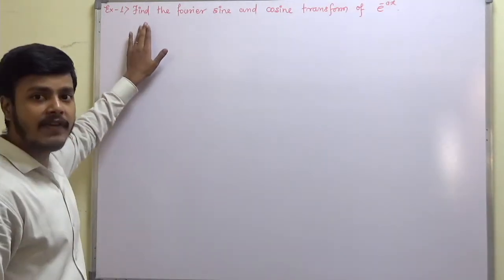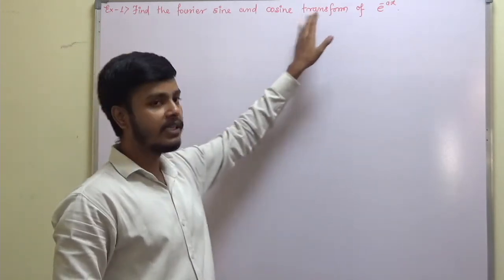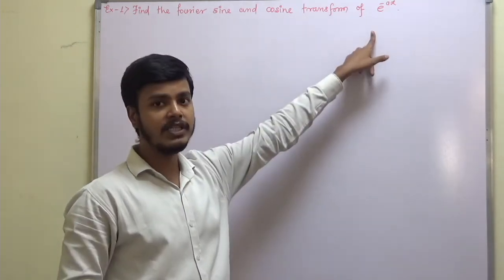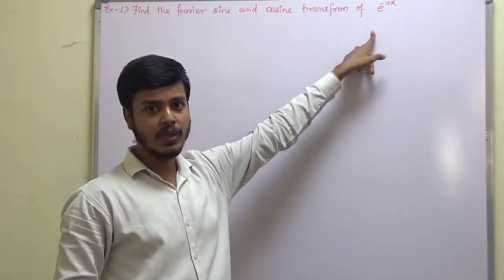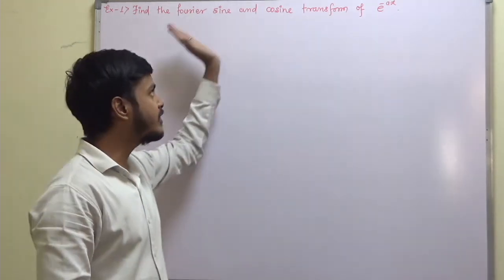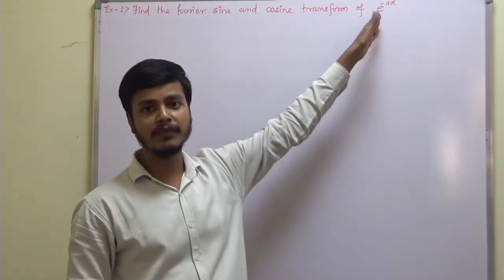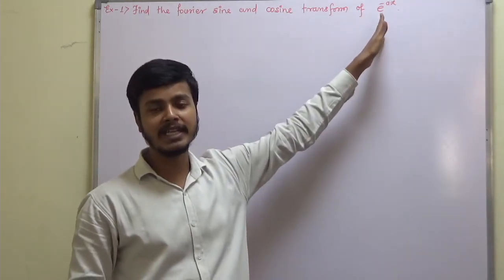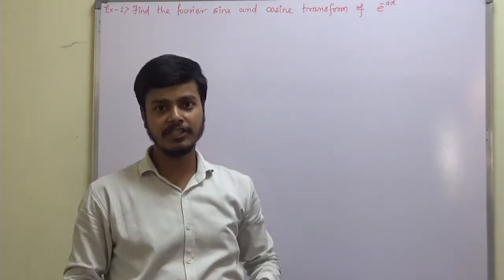This problem says: find the Fourier sine and cosine transform of e to the power minus x. To find out the Fourier sine and cosine transform of e to the power minus x, you must remember the definition.